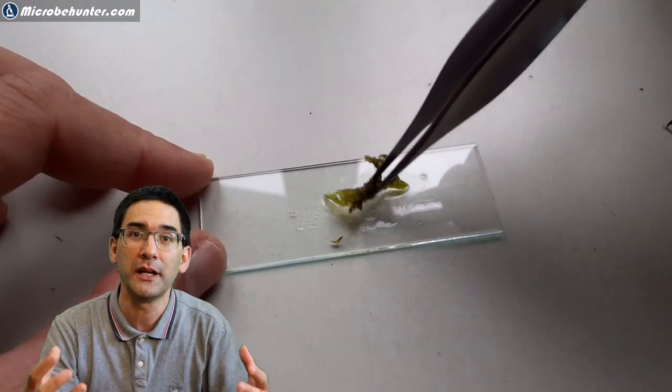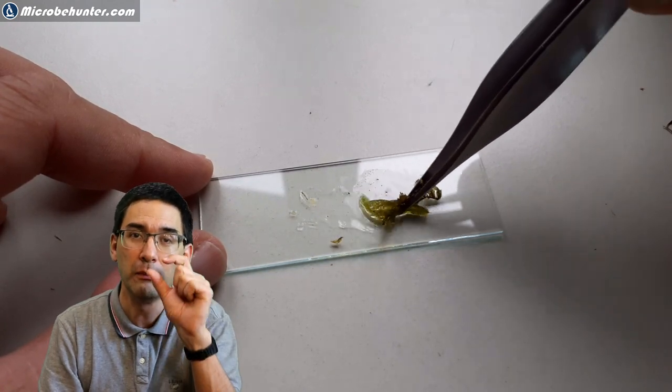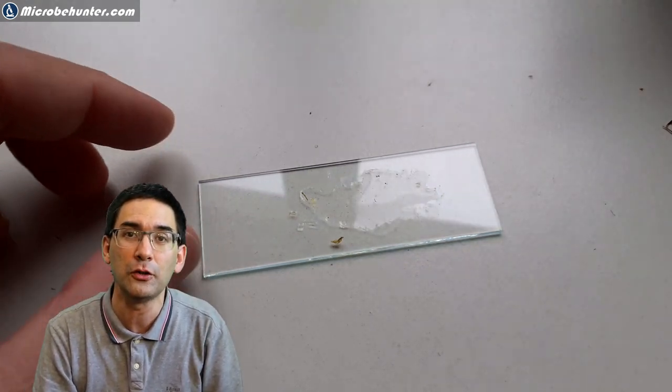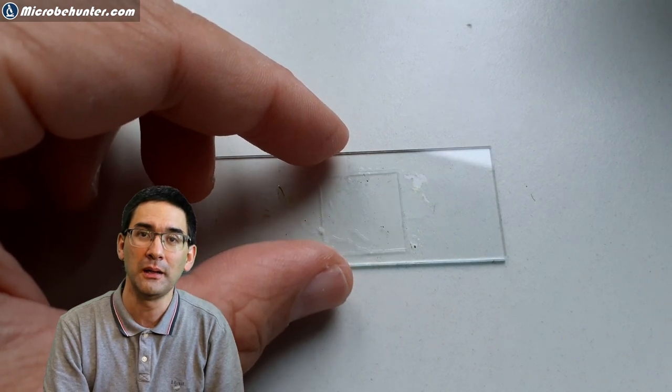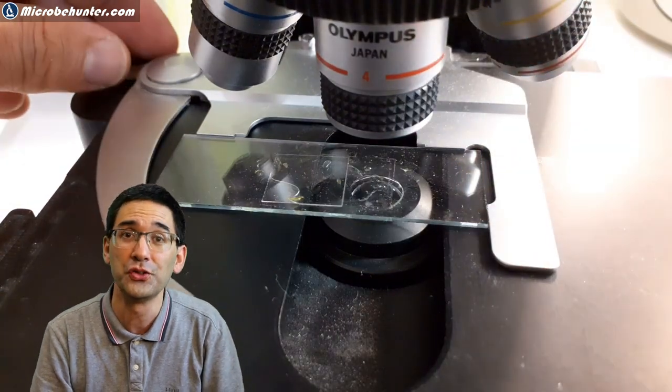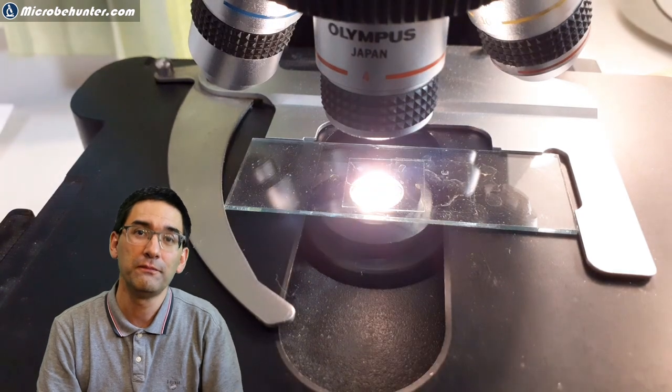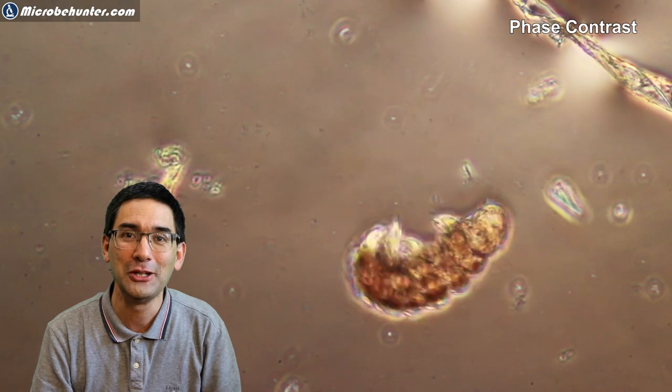I took some moss sample and tapped it on a microscope slide with a drop of water, then added the cover glass. You find a lot of things there, and of course, if you're lucky, some of those moss piglets or tardigrades. It's a very easy and rewarding thing to try out.